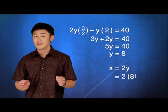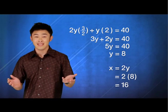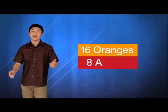Since X equals 2Y, therefore X is 16. So we have 16 oranges and 8 apples.